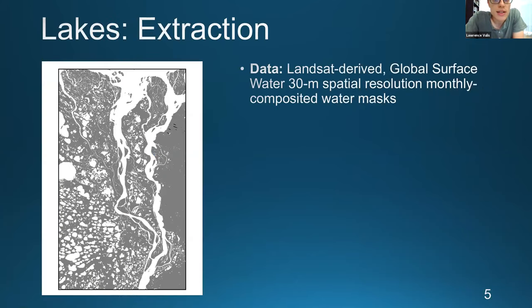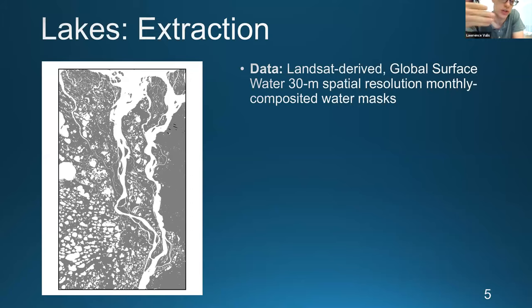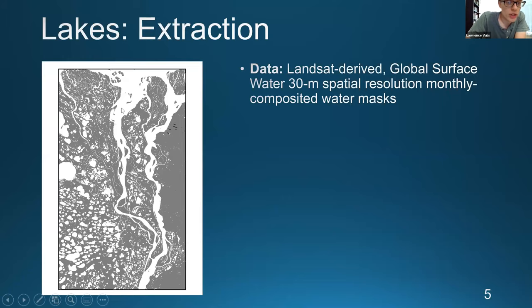The dataset we use to analyze the deltas is called the Global Surface Water dataset. It's Landsat-derived, so it has 30-meter spatial resolution and monthly composited water masks — you composite several Landsat masks to generate a monthly image, such as a July image for a given year.